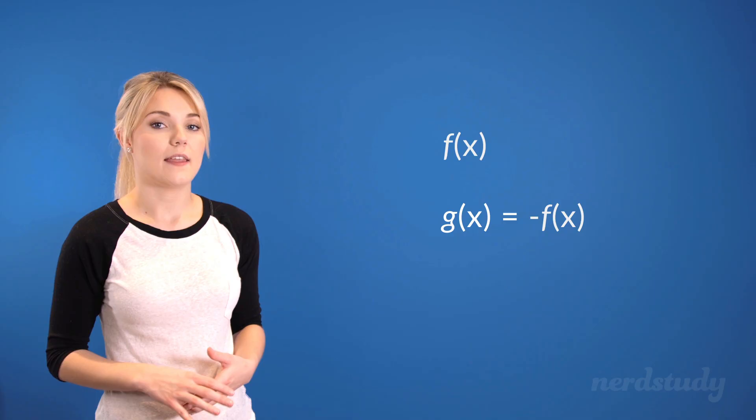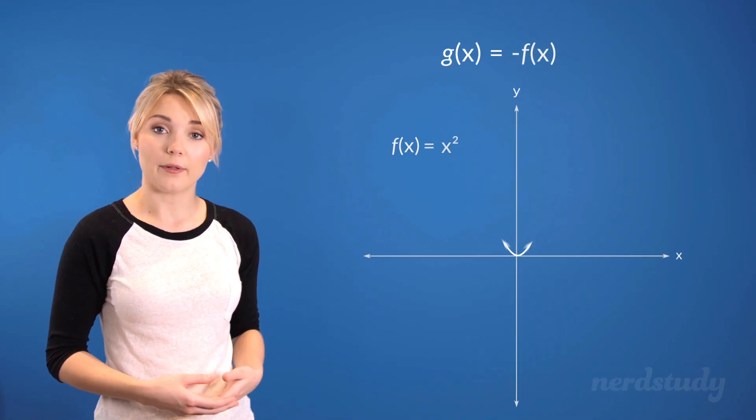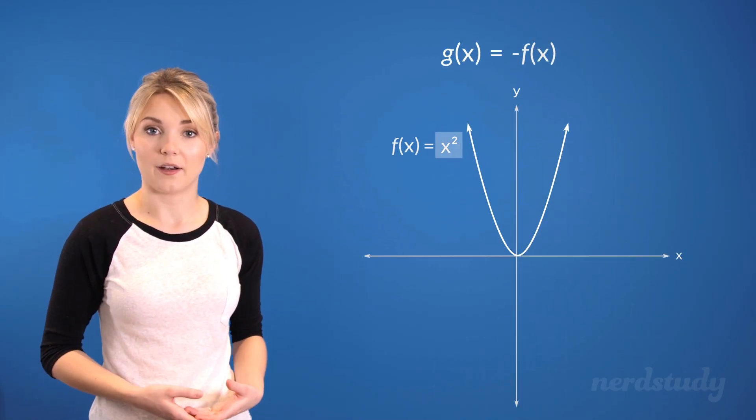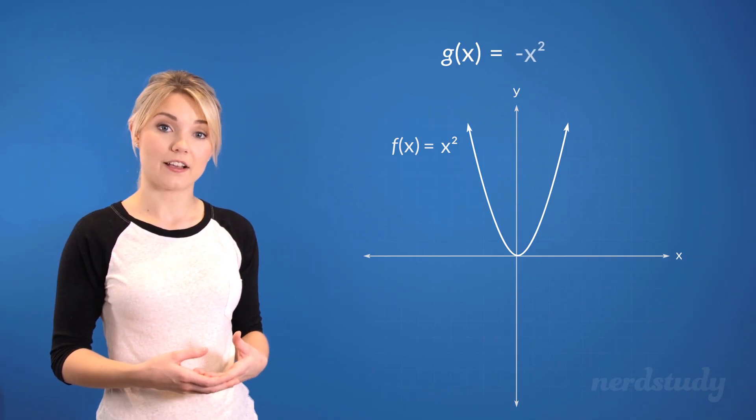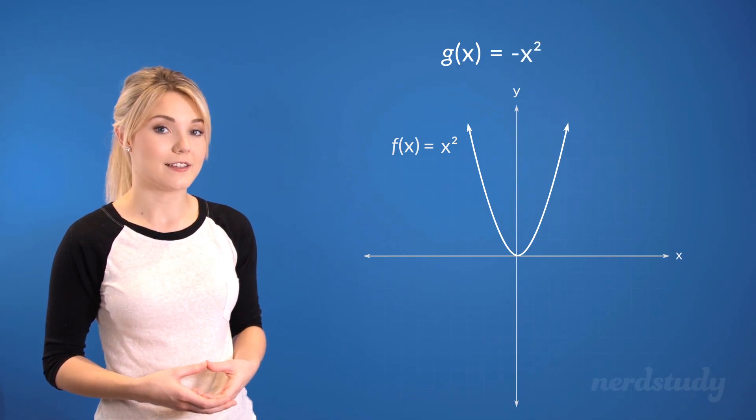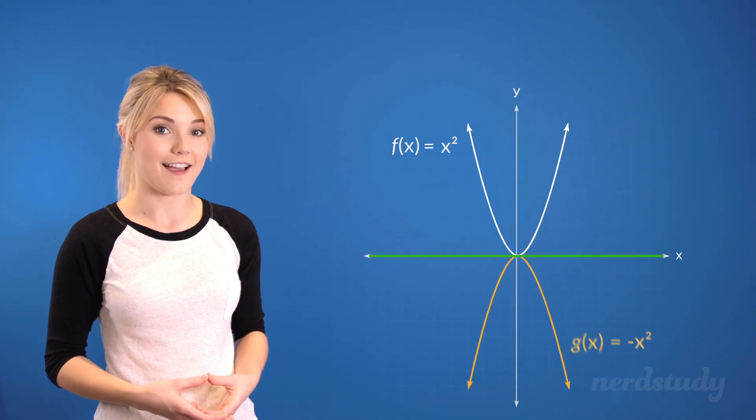Let's say that our f(x) is a parabola represented as x squared. Then our g(x) would be negative x squared, which would be represented by a reflection along the x-axis.